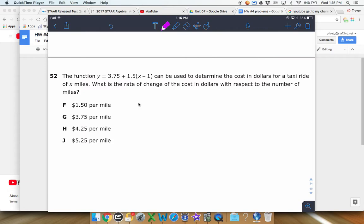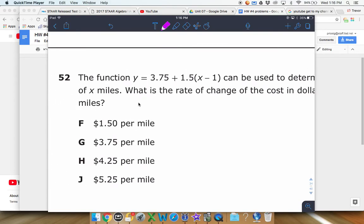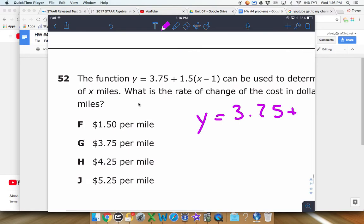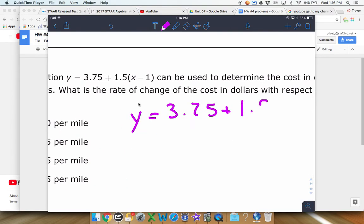Next one here. The function y equals 3.75 plus 1.5 times (x minus 1) can be used to determine the cost in dollars for a taxi ride of x miles. What is the rate of change of the cost in dollars with respect to the number of miles? So in this case here, this equation is a little weird, so I'm going to go ahead and clean it up. I'm going to distribute that 1.5.